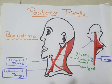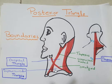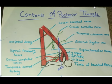Today let us discuss the subdivisions of the posterior triangle and also the contents of the posterior triangle. As we have already discussed the boundaries, the inferior belly of the omohyoid muscle divides the posterior triangle into the occipital triangle and the supraclavicular triangle. The supraclavicular triangle is also called the subclavian triangle.